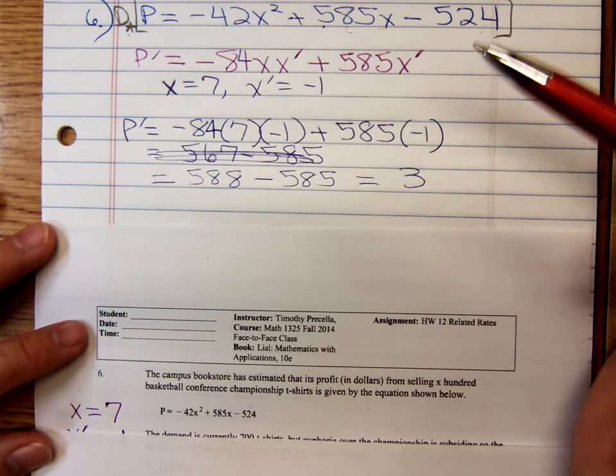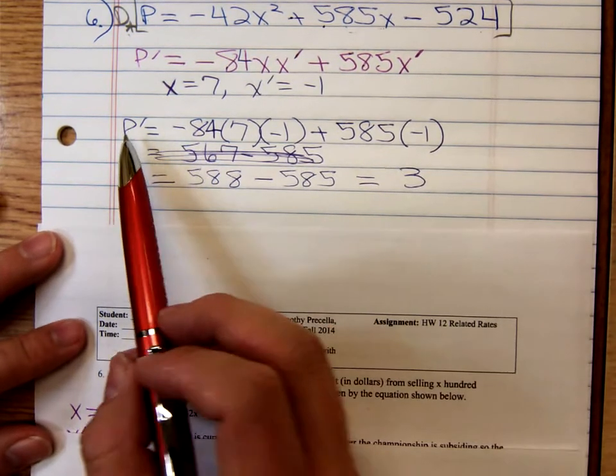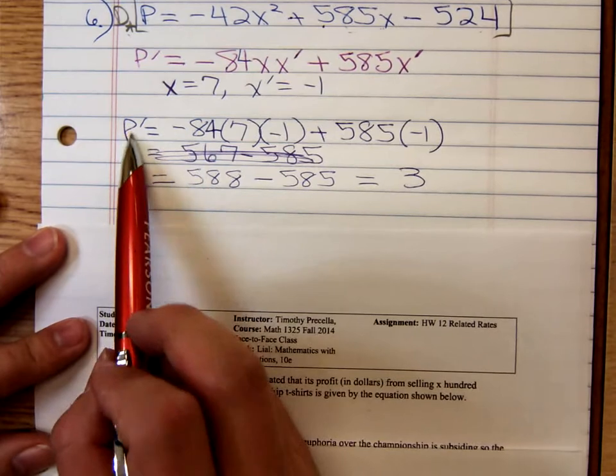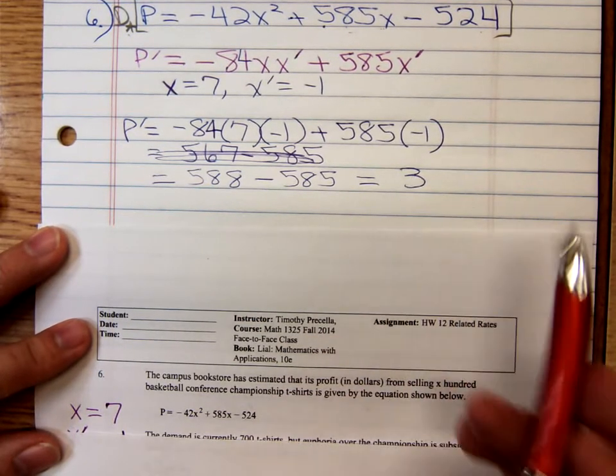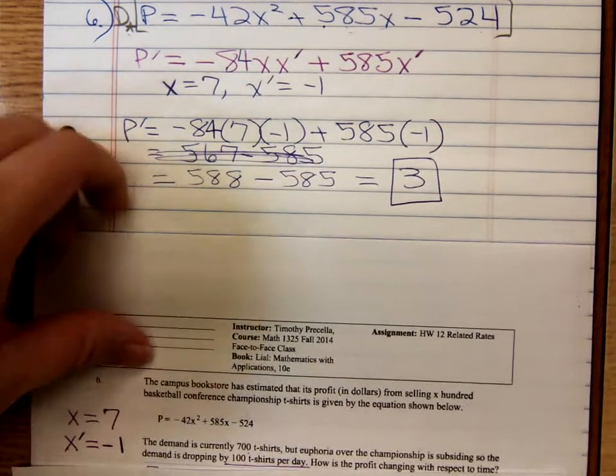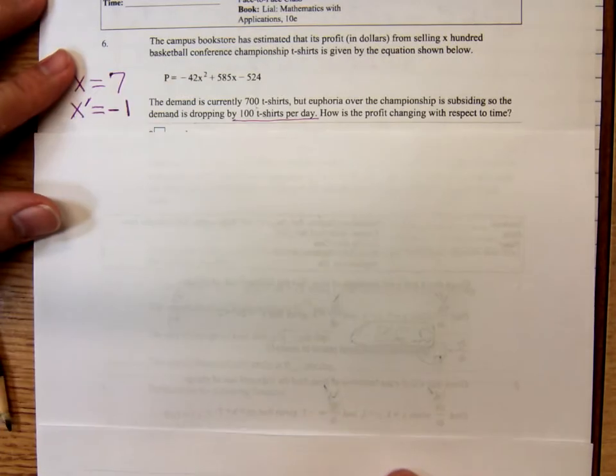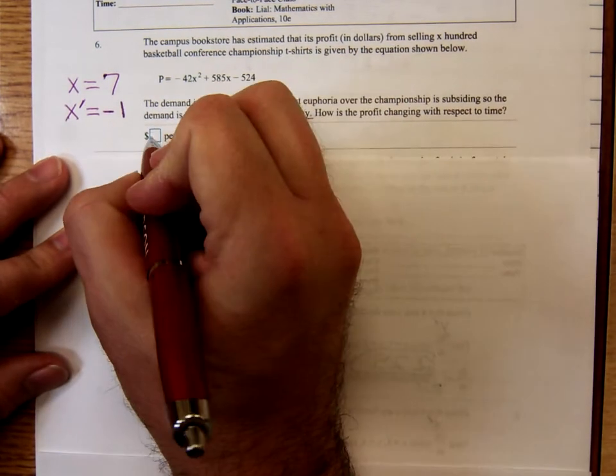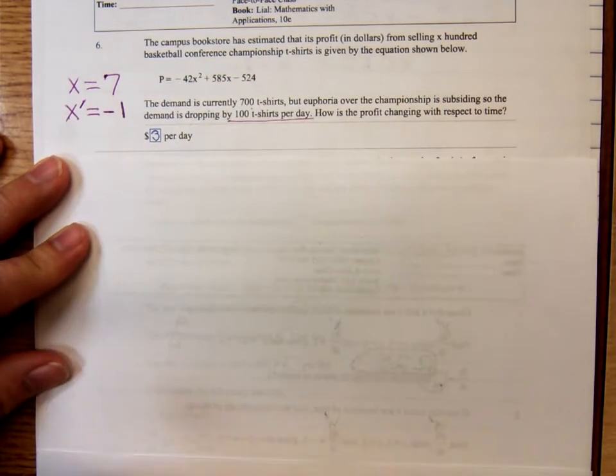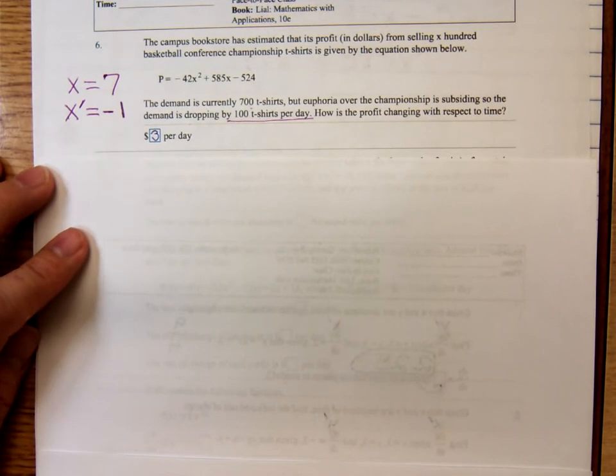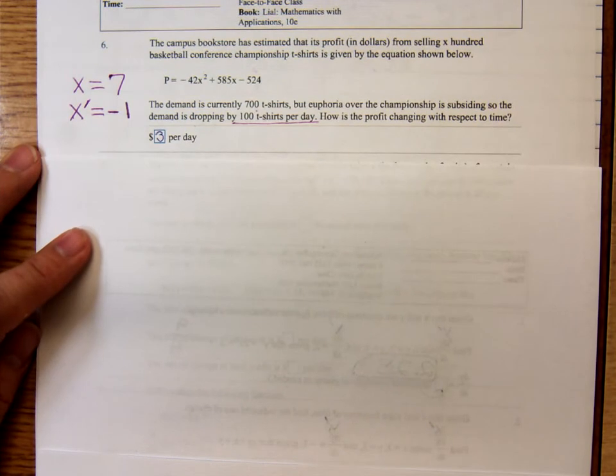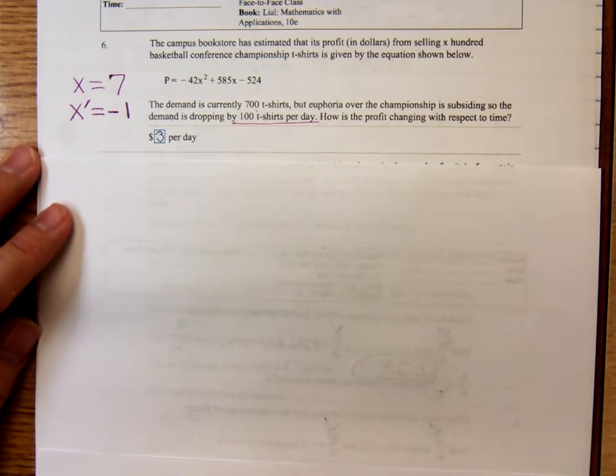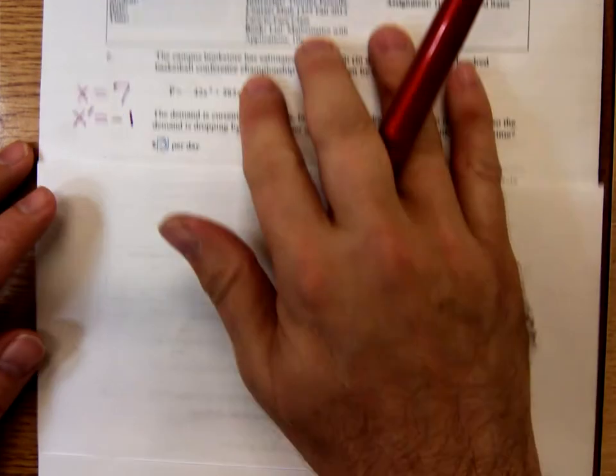So, even though the demand for the t-shirts is dropping, the profit, the rate of change, the profit is still positive. So, coming back over here to number 6. How is the profit changing with respect to time? It looks like it's still increasing at a rate of 3 dollars per day. And the profit, I wonder if the profit is in terms of 100. No, it's just plain old dollars. So, 3 dollars a day.